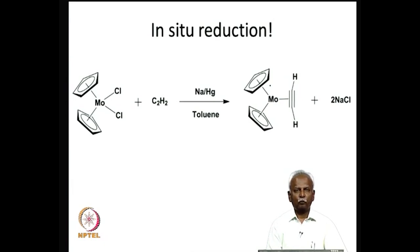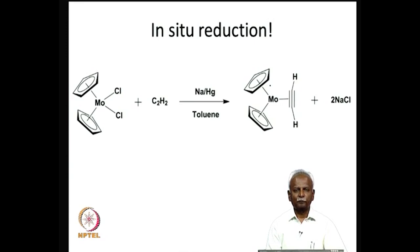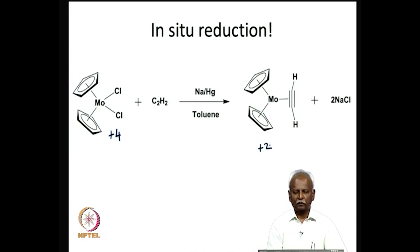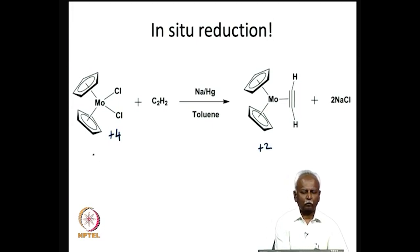Pi-accepting behavior for the acetylene can occur only if the metal is in a low oxidation state. Very often it is necessary to reduce a high oxidation state metal to a lower oxidation state. Here we have molybdenum which is in the plus 4 oxidation state being reduced to molybdenum plus 2 using sodium amalgam, making it a better pi donor. By bubbling acetylene through a solution of the molybdenum dichloride, you can isolate the acetylene complex of the molybdenum plus 2 complex, where the acetylene hydrogens would be bent.